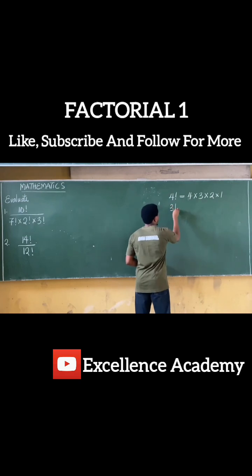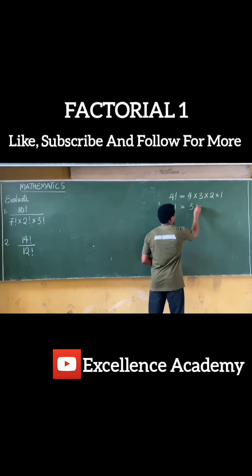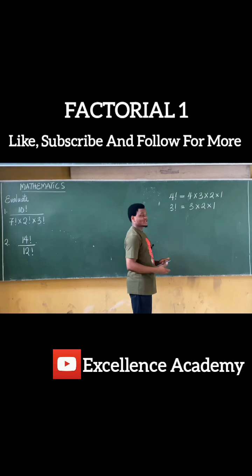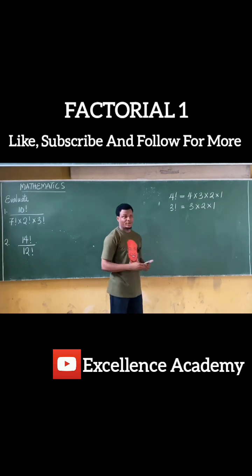Also, if I have 3 factorial, that also becomes the multiplication of consecutive terms in descending order, which becomes 3 times 2 times 1. Of course, until 1. So we have this. So this is the concept about factorial.